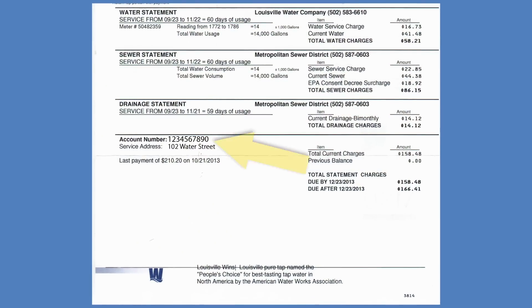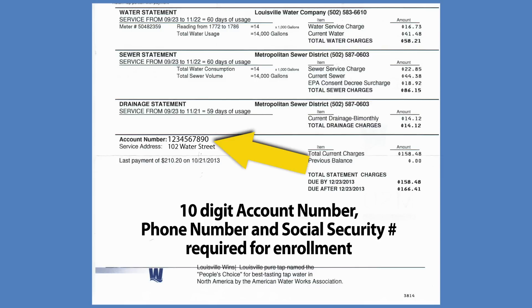Find your 10-digit account number on your statement. You will also need the phone number and the social security number associated with your account.